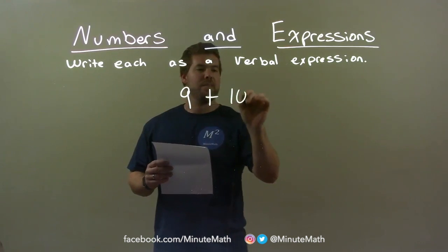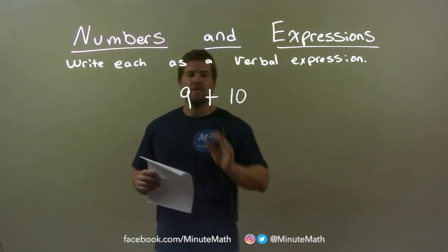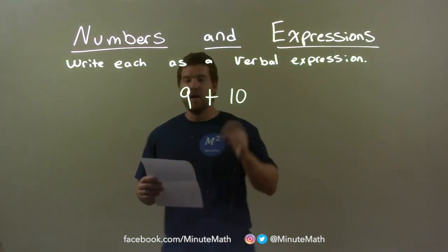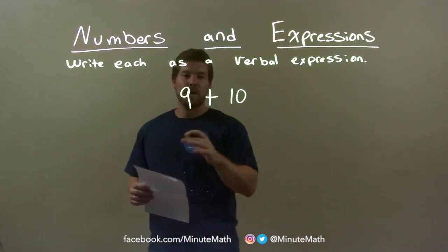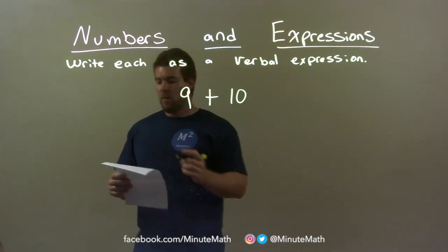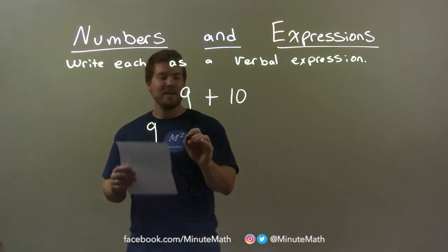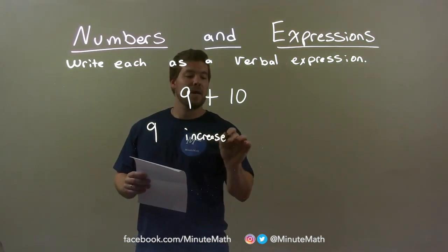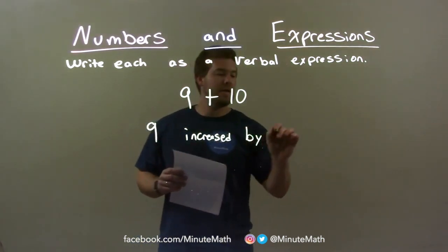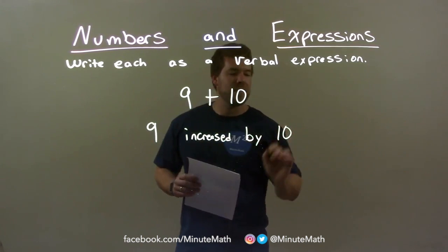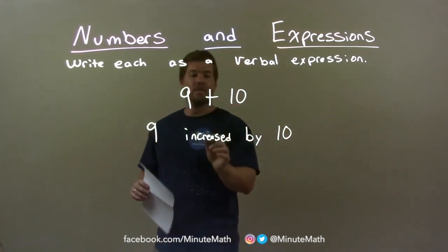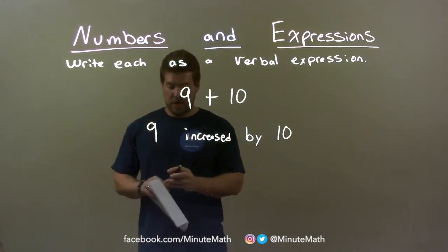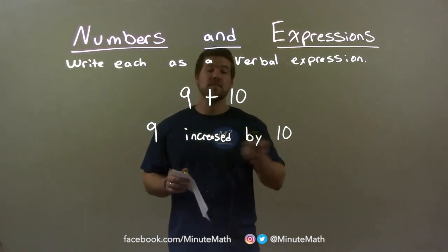9 plus 10. Well, how do we write this as a verbal expression? There are many ways to write it, but one way — we can start with 9, and 9 is increased by 10. So here we have that plus sign — another way of saying the plus sign is 'increased by.' So we have 9 increased by 10.